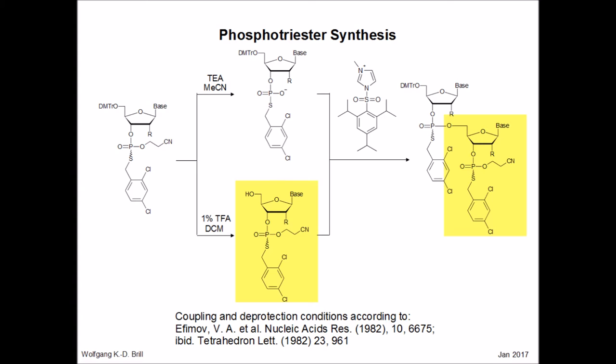The nucleoside phosphorothioate triester may be used to obtain oligonucleotide phosphorothioates according to a triester methodology described by Efimov et al. One has to realize that all the groups surrounding the phosphorus, except for the nucleoside, are protective groups that can be removed selectively. The process begins by beta-dicyanoethylation with triethylamine. The resulting nucleoside phosphorothioate diester is one coupling component. The alcohol component to obtain an internucleotidic linkage would then be obtained by detritylation of a nucleoside. Under those conditions, the other two groups on the phosphorus — the cyanoethyl group or the dichlorobenzyl group — would be stable. Both components can then be coupled, resulting in a phosphorothioate triester.